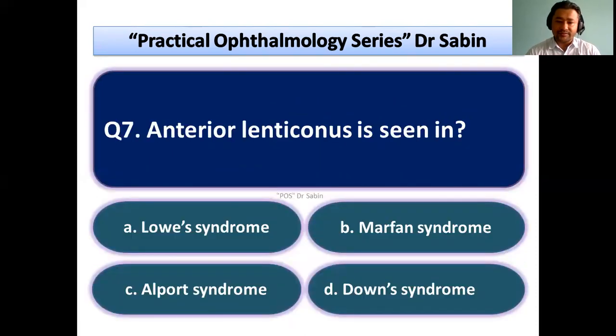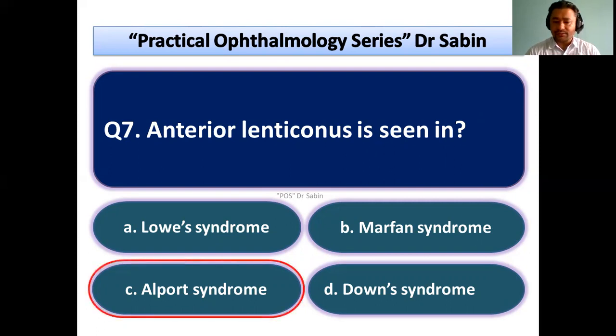Anterior lenticonus is seen in — this is a straightforward question; answer is A. Anterior lenticonus is seen in Alport syndrome. Posterior lenticonus is seen in Lowe syndrome.